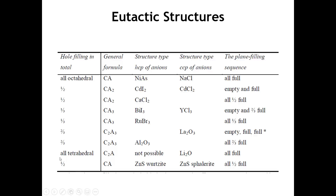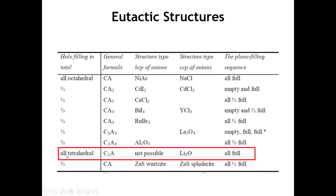Filling all tetrahedral holes in a cubic close-packed arrangement gives the structure of lithium oxide, Li₂O, called the anti-fluorite structure. It's named anti-fluorite because reversing the roles—making a CCP array of calcium ions and putting fluoride in the tetrahedral holes—gives the fluorite structure, CaF₂. The fluorite and lithium oxide structures are symmetrically identical but with cation and anion positions swapped. Filling all tetrahedral holes in an HCP array gives a structure that is not observed.